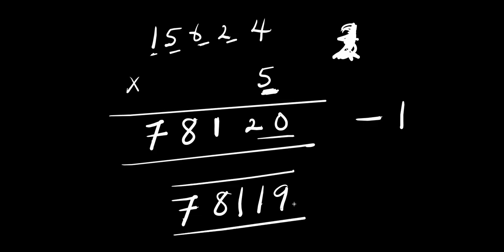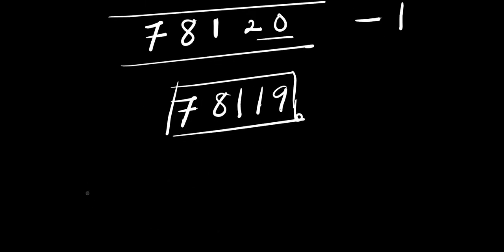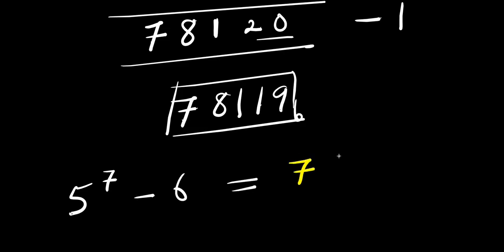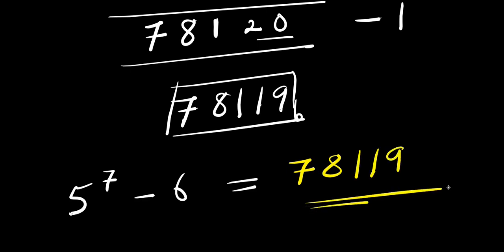So this becomes your final answer without the use of a calculator for 5 to the power of 7 minus 6. The answer equals 78,119.